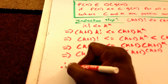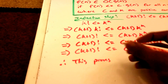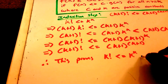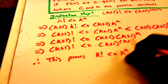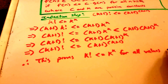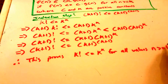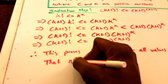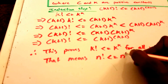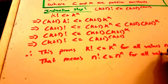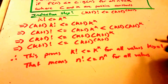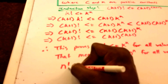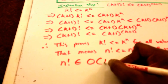Therefore, this proves k factorial is less than or equal to k to the power of k for all values of n greater than or equal to 1. That means n factorial is less than or equal to n to the power of n for all n greater than or equal to 1. Therefore, n factorial belongs to big O of n to the power of n.